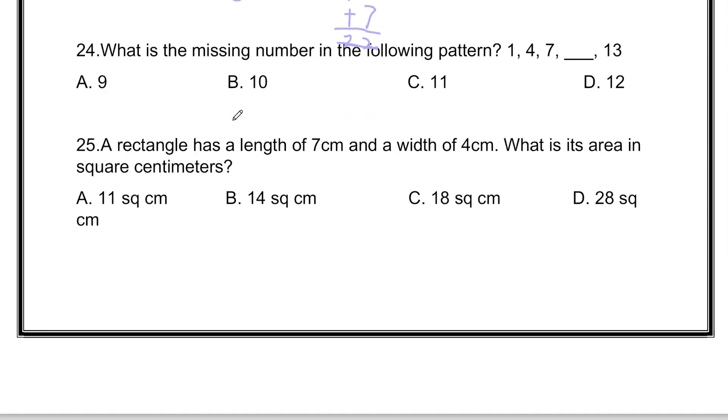What is the missing number in the following pattern? 1, 4, 7, blank, 13. To find the answer, we have to see how it is skip counting. 1, then 2 and 3 are skipped to get 4. Then 5 and 6 are skipped to get 7. Then 8 and 9 are skipped. That means 10 is the answer.